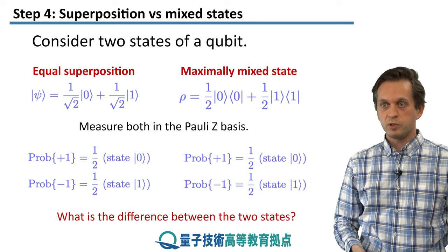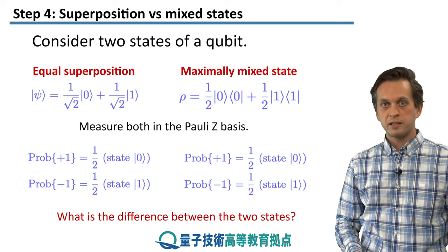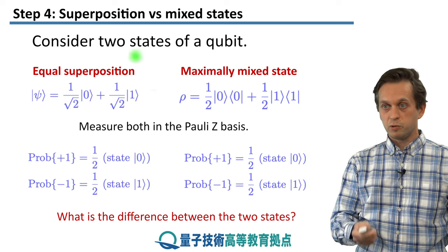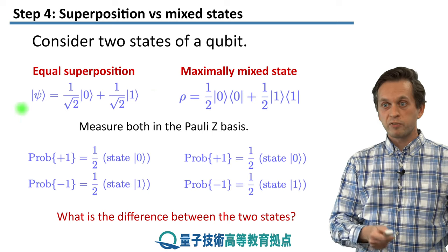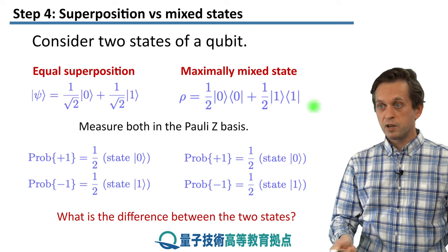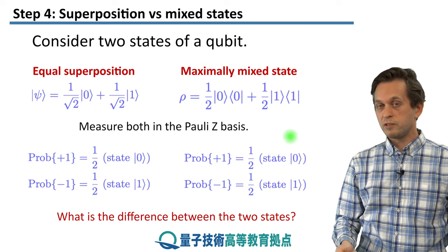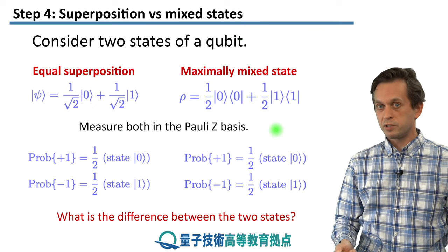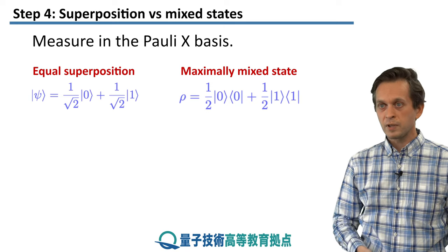So what's going on? What's the difference between these two states? I started by saying that for one of these states, the equal superposition, we have perfect knowledge of the state, whereas for this one, we don't have perfect knowledge of state. In fact, we are maximally unsure what the state is.